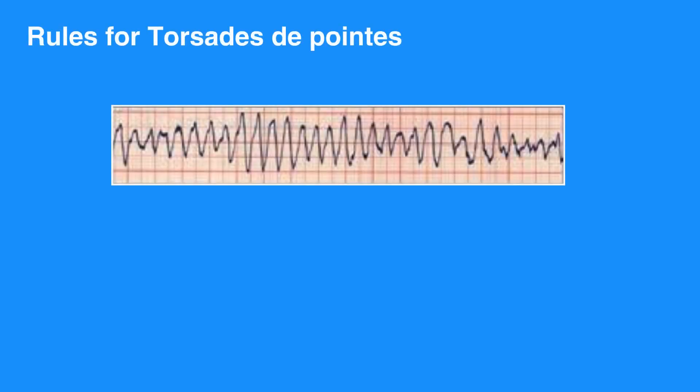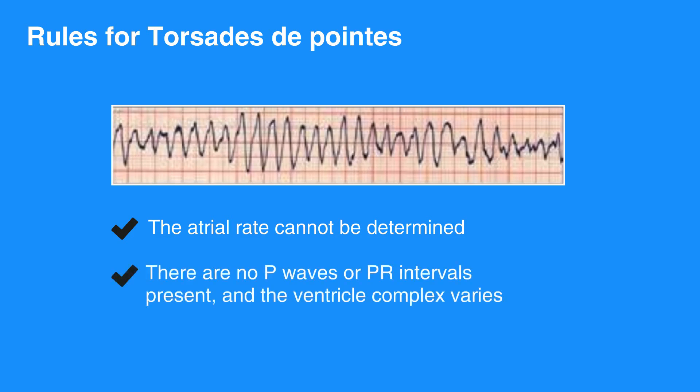The rules for Torsades de Pointes, which is an irregular, wide-complex tachycardia, include: no regularity. The atrial rate cannot be determined. Ventricular rate is usually between 150 and 250 beats per minute. There are no P waves or PR intervals present, and the ventricular complex varies.